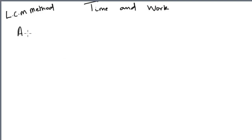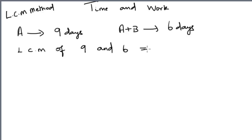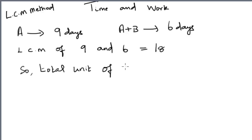Let us look at another example of using the LCM method to solve a time and work problem. Assume A alone can do a work in 9 days, and A and B can together do the same work in 6 days. The question is: how many days will B alone take to complete the same piece of work? To begin, let us calculate the LCM of 9 and 6, which is 18. This LCM should be assumed as the total unit of work, so we assume the total units of work is 18.